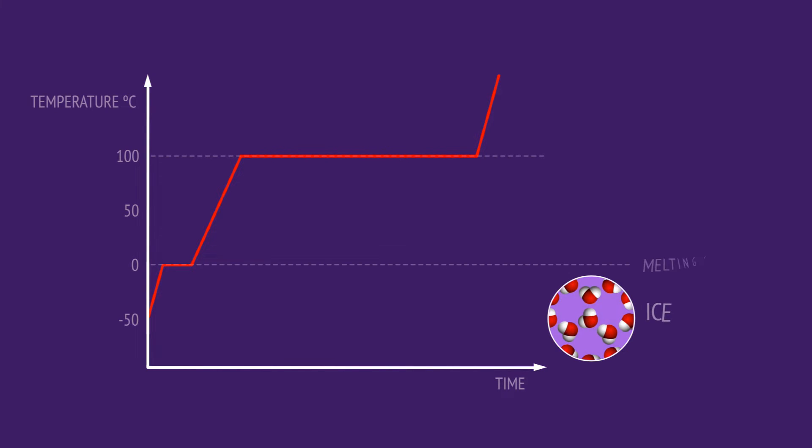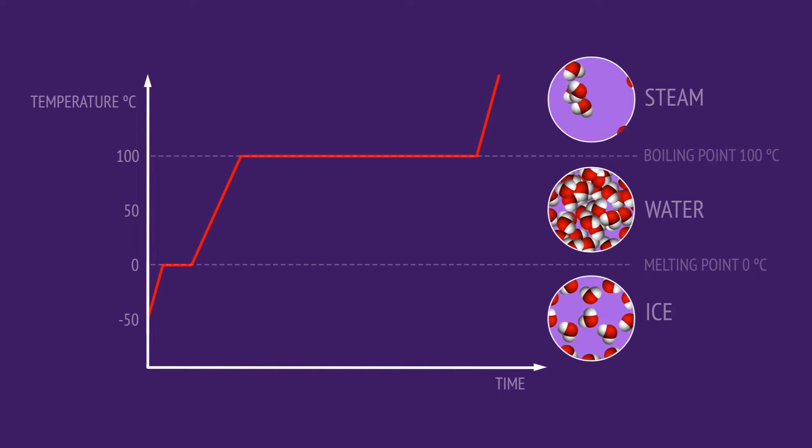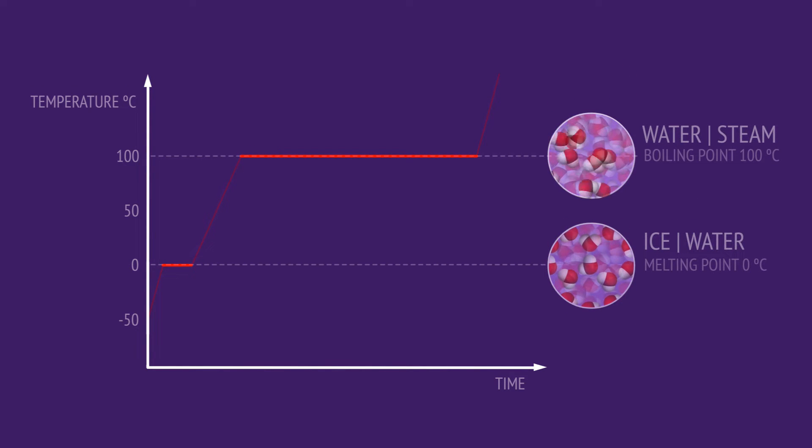The heating curve of water shows the changes in temperature as heat energy is absorbed over time. The sloping lines show when the temperature of the ice, water, or steam is steadily increasing. The flat lines show when the temperature is constant during a state change.